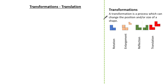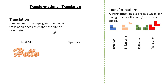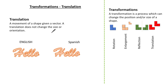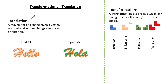So what do we mean by translation? Well, translation is a movement of a shape given a vector. A translation does not change the size or the orientation. Just like we translate in language — translate means we move or slide — from one language to another we're translating the word 'hello' into Spanish because we're moving the word into another language. So translation is basically a movement.